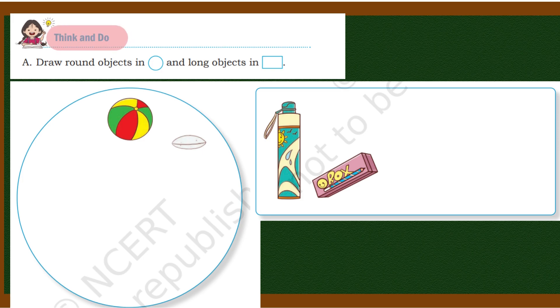In the next part it is saying 'Think and Do.' What we have to do? We have to draw round objects in this circle and long objects in this box. We have a circle where we need to draw all round things.